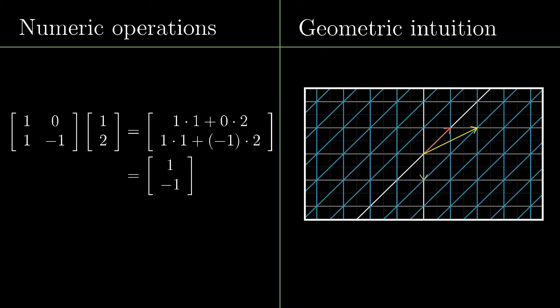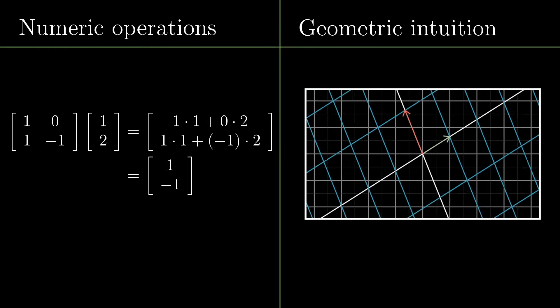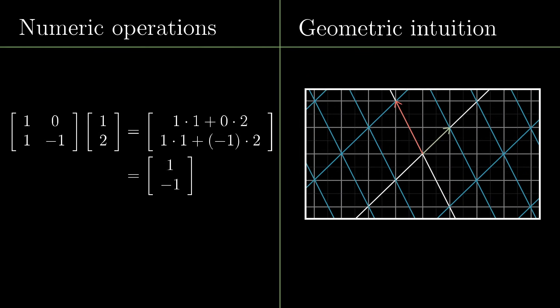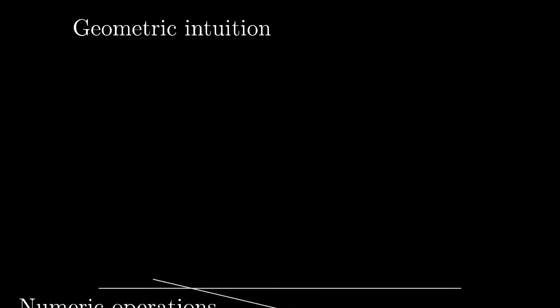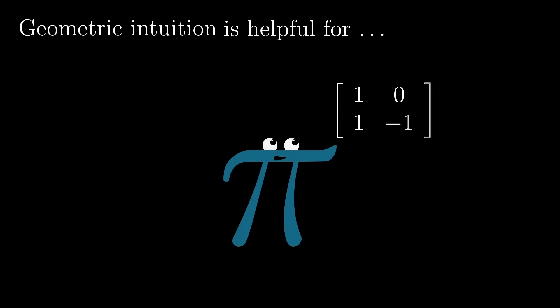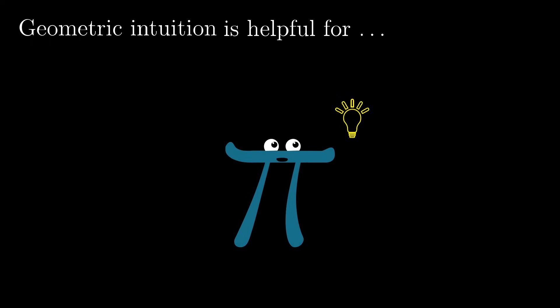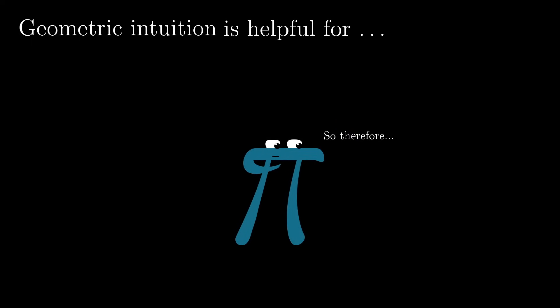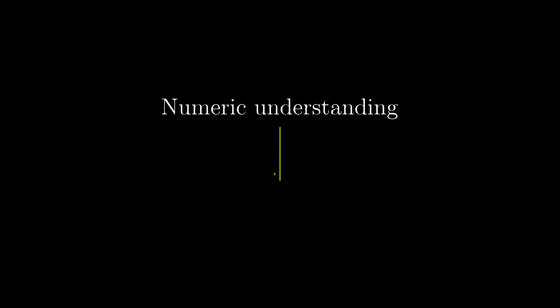There's a fundamental difference between understanding linear algebra on a numeric level and understanding it on a geometric level. Each has its place, but roughly speaking, the geometric understanding is what lets you judge what tools to use to solve specific problems, feel why they work, and know how to interpret the results. And the numeric understanding is what lets you actually carry through the application of those tools.